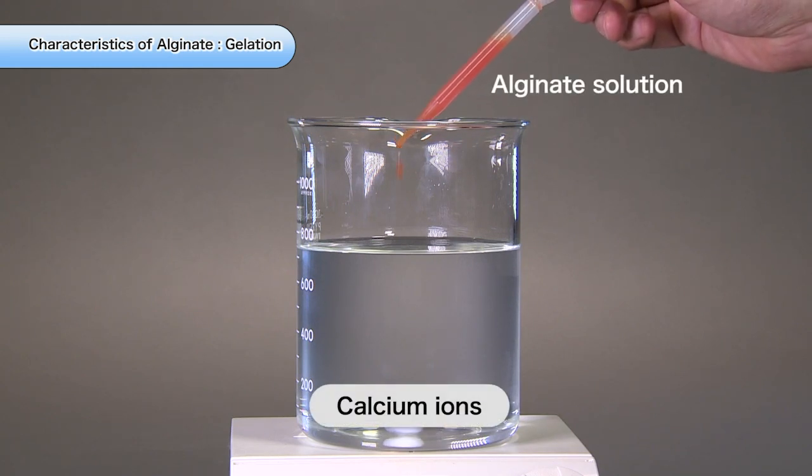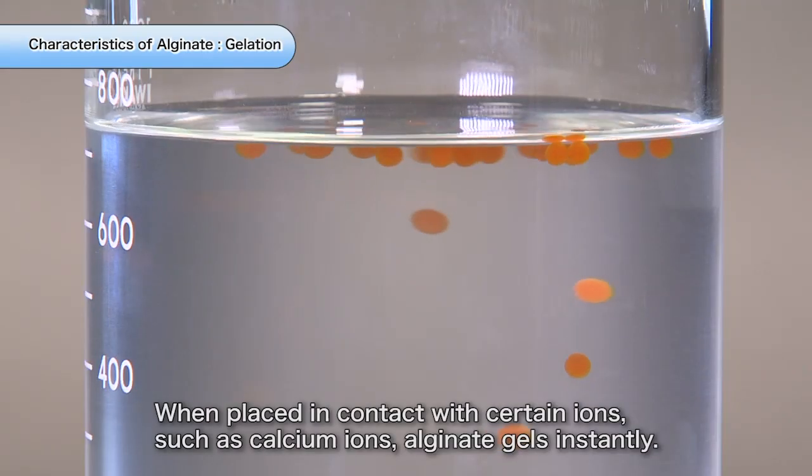When placed in contact with certain ions, such as calcium ions, alginate gels instantly.